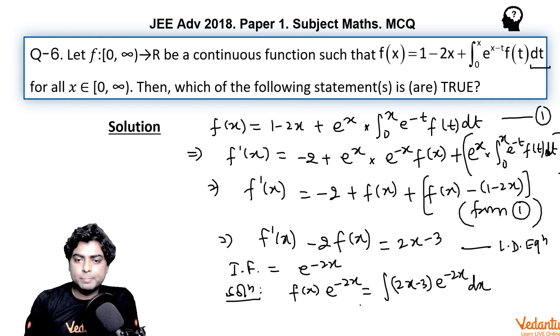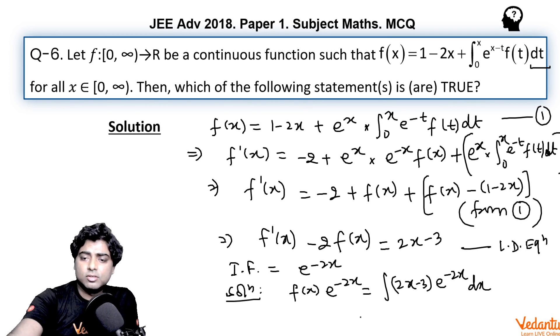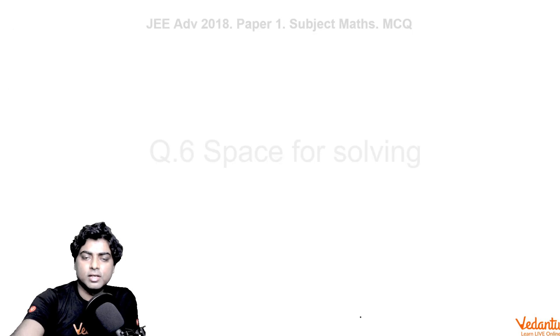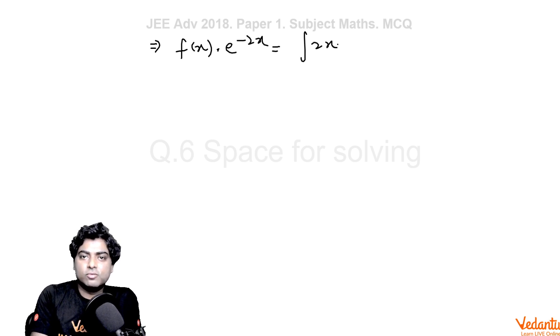So from here, taking it in the next phase, f(x) times e^(-2x) equals integral of (2x - 3) e^(-2x) dx. So using the integration by parts formula, we will take the first function as 2x - 3, so as it is,